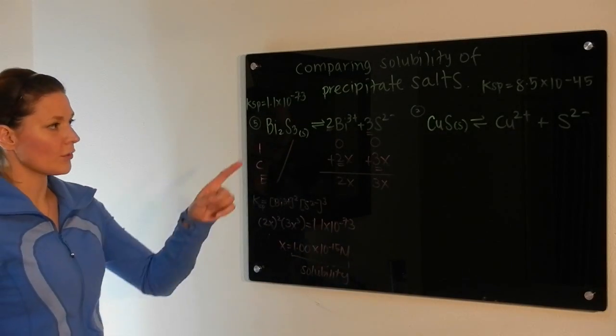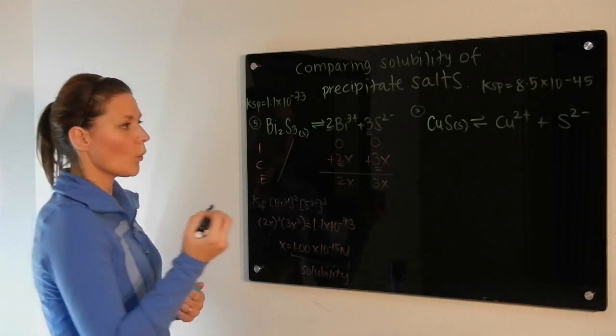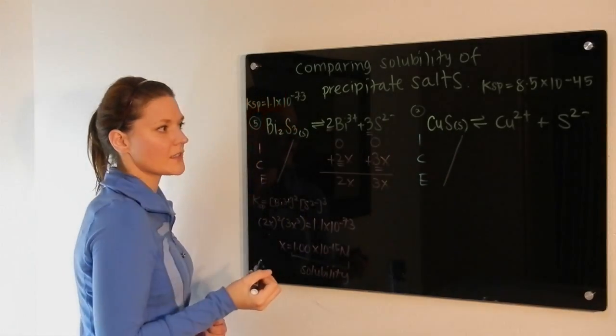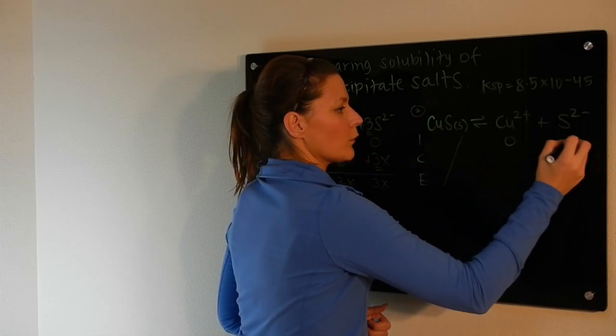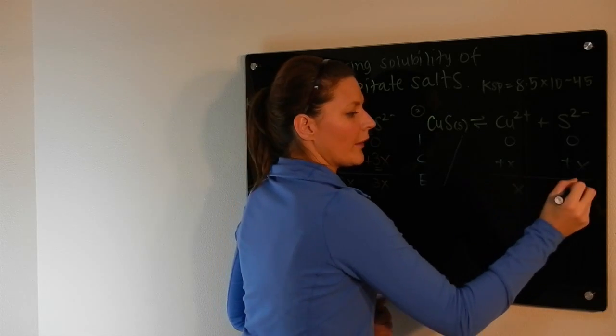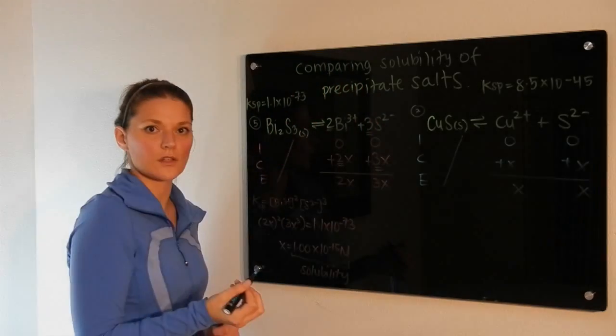Let's now compare that to copper sulfide. Once again, we're going to have to do an ICE chart calculation. Not worried about the solid, none of these to begin with. At equilibrium I would have X of the copper and X of the sulfide.